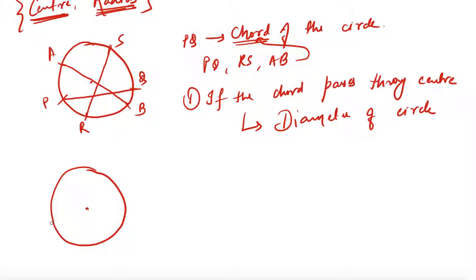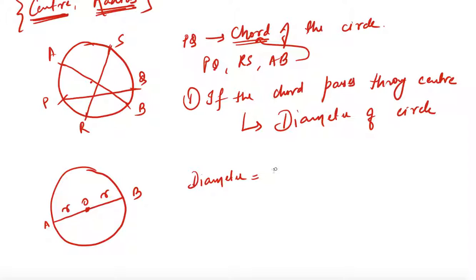Here I have a circle with center O, and a chord which passes through the center. This is point A and point B — the distance from O to A is the radius, and from O to B is also the radius. So the diameter is nothing but the chord which passes through the center, and the length of the diameter is two times the radius of the circle.